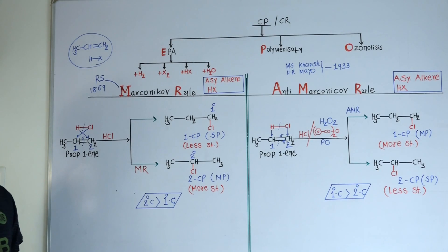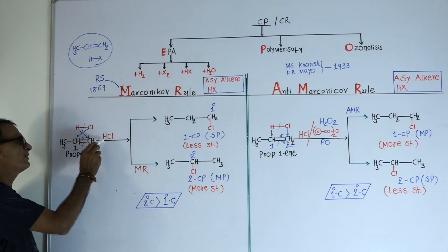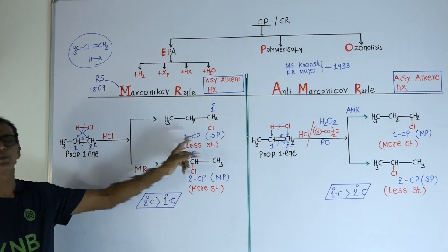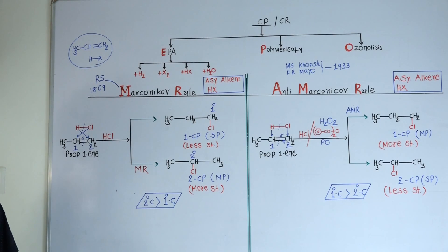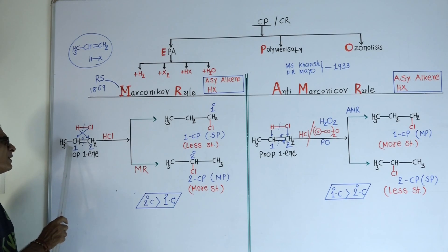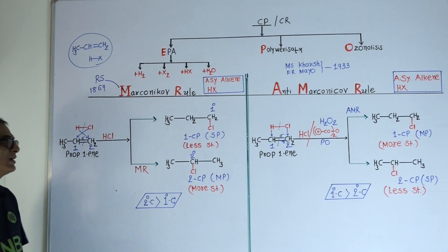Which part will attach with which carbon? There are two possibilities. First possibility: suppose hydrogen attaches with the first carbon and chlorine attaches with the second carbon — at that time 1-chloropropane, otherwise known as normal propyl chloride, will be the product. Second possibility: hydrogen attaches to the second carbon and chlorine attaches to the first carbon — then 2-chloropropane, otherwise known as secondary propyl chloride, will be the product.